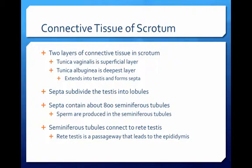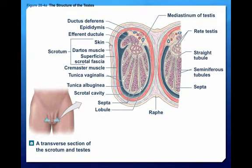These partitions all converge near the entrance of the epididymis. The septa subdivide the testes into lobules that contain about 800 tightly coiled tubules called seminiferous tubules. Sperm are produced in these tubules, and the tubules combined are about a half a mile long. The seminiferous tubules connect to a network of passageways called the rete testes that connects to the epididymis. The newly formed sperm travel from the seminiferous tubules through the rete testes and into the epididymis. Here you can identify the septa, the seminiferous tubules within the septa, the rete testes, and the ducts of the epididymis.